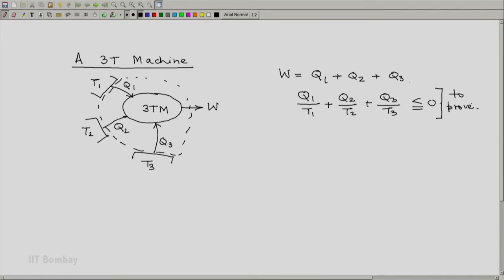Let us attack this problem by the technique of reductio ad absurdum. We say, let us assume that what we attempt to prove is not true. So we assume that Q1/T1 plus Q2/T2 plus Q3/T3 is greater than zero, and let us see the consequences.